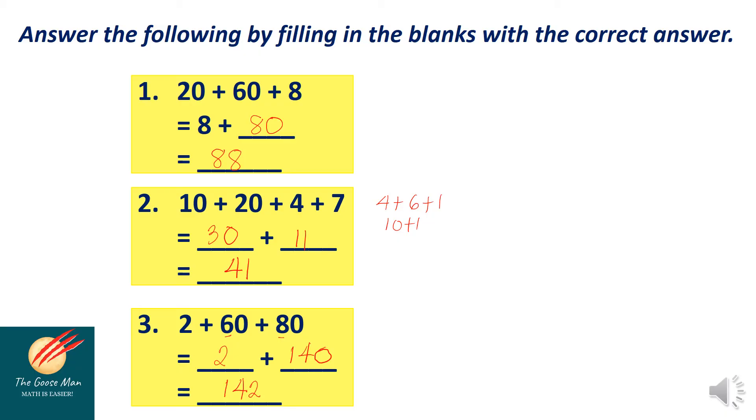Next item. I have 80 plus 90 plus 3 plus 2. I can add 8 plus 9 as 17 and just add 0, so 170. Then 3 plus 2 will give me 5. So I have 170 plus 5 is 175.